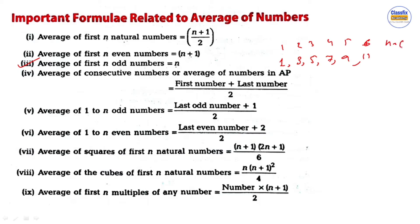If n is equal to 6, then the average is equal to 6. This is our next formula — it is simple.